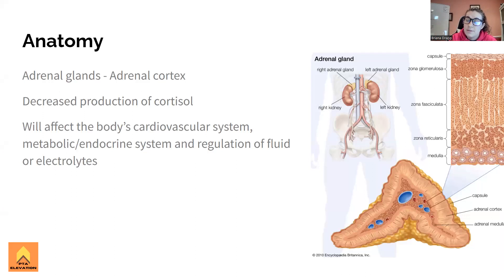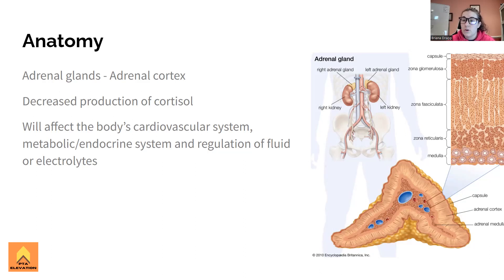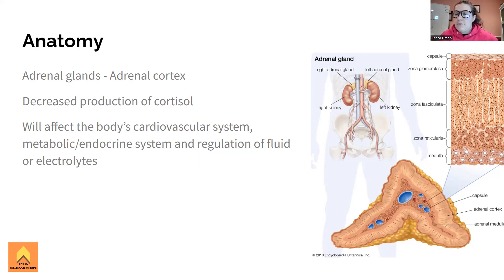Because it is cortisol, cortisol comes from the adrenal glands. We have two parts of the adrenal gland. We have the medulla, which is the more inner part - this is where our catecholamines hang out, so that's our epinephrine, norepinephrine, and dopamine. And then in the adrenal cortex, that is where we have cortisol produced. I think cortisol-cortex helps me remember where it's coming from.